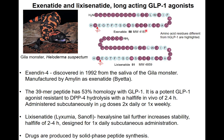Exenatide is quite a large peptide with a molecular weight over 4000, so it is not suitable for oral delivery and is administered by subcutaneous injection. Later, Sanofi came up with a variant of the Gila monster peptide: lixisenatide, which has six lysine residues added as a hexalysine tail at the end of the peptide sequence. This modification is beneficial for activity and stability, allowing once daily dosing.